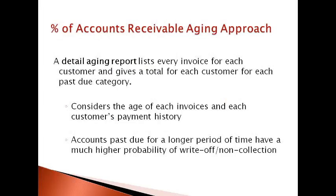The percent of accounts receivable aging approach is similar to the percent of accounts receivable approach in that it estimates the total amount that is not expected to be collected. This method uses a report that details how long each unpaid invoice has been outstanding. The older the outstanding invoice, the higher the risk of not collecting from the customer. This approach generally gives the best estimate of amounts that will not be collected because it uses the most detailed current information. It is used by larger companies or companies with resources to devote to an aging schedule. Most companies use an aging report that shows the amount owed by customer and the days past due for each invoice.